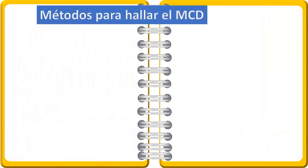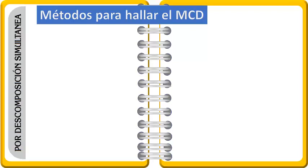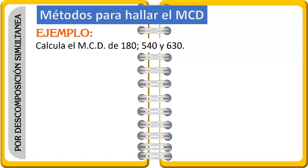Métodos para hallar el máximo común divisor. El primer método es por descomposición simultánea. Un ejemplo: calcular el máximo común divisor de 180, de 540 y 630.